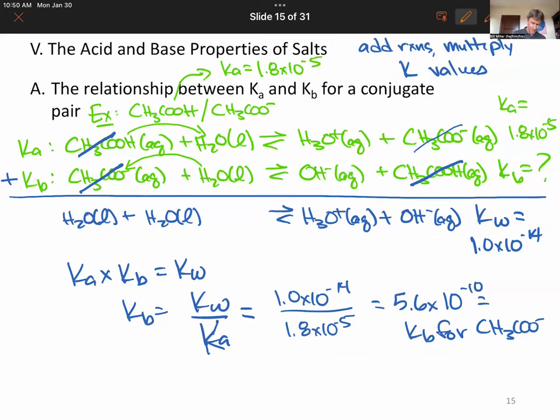And that is the KB value for CH3COO minus, the conjugate base of acetic acid. And this process is how you're going to find the Ka and KB values for any ion. So given the Ka and KB for the molecules, you can find any ion this way.